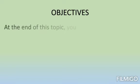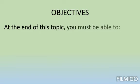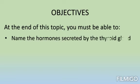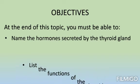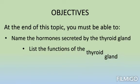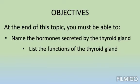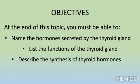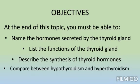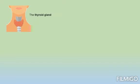During this topic and at the end of it, you must be able to: first, define and name the hormones secreted by the thyroid gland; list the functions of the thyroid gland; describe the synthesis of the thyroid hormones; and finally, compare between hypothyroidism and hyperthyroidism.